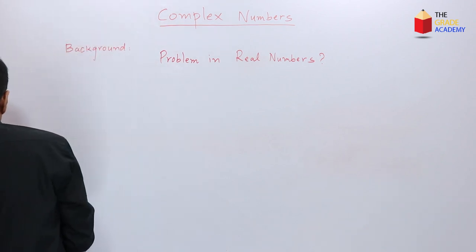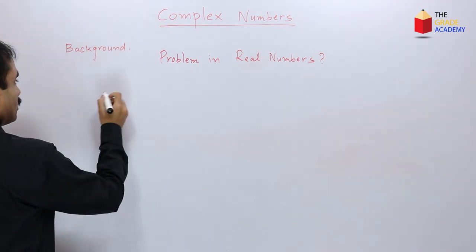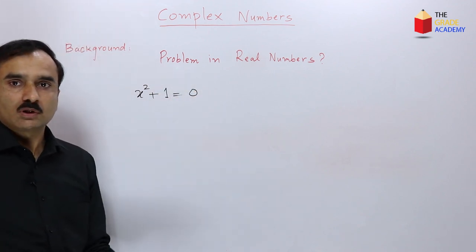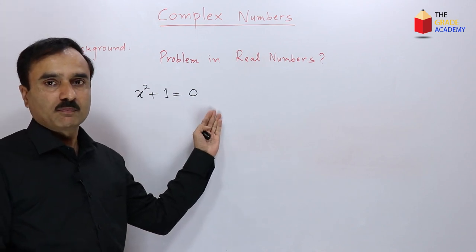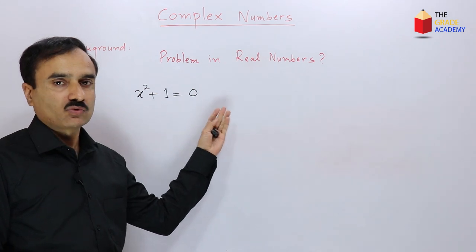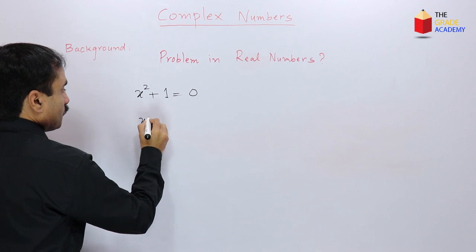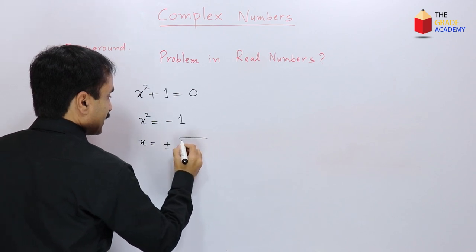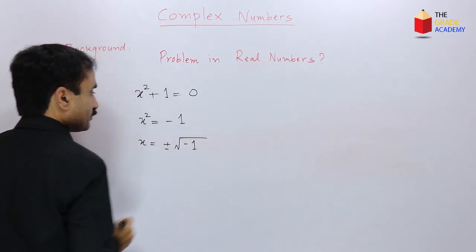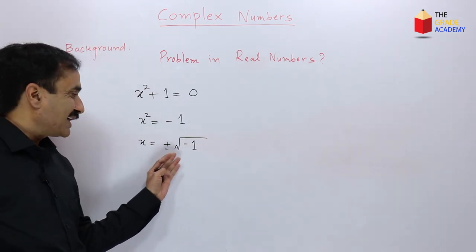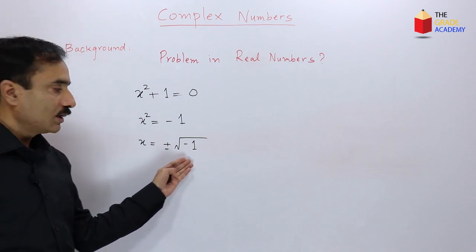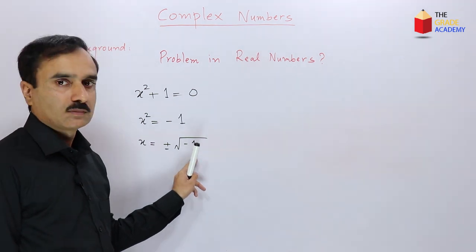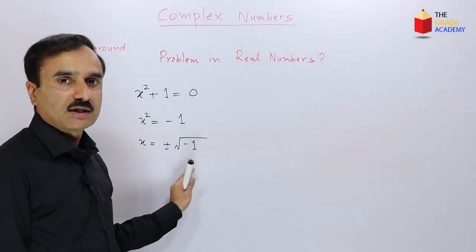What is the solution of the equation x² + 1 = 0? Solving in real numbers, we get x equals plus or minus the square root of negative 1. Now, does this number exist in real numbers? No. No such number exists in real numbers, so this equation does not have a solution in the set of real numbers.